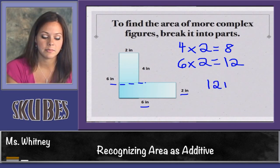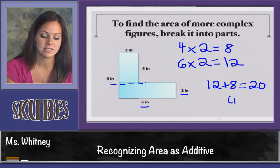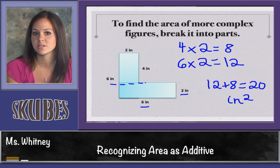12 plus 8 is equal to 20, and we're talking about inches, so 20 square inches, which we can write inches squared.